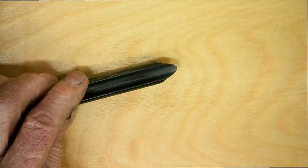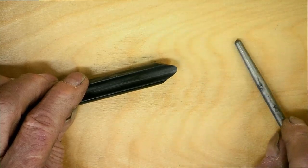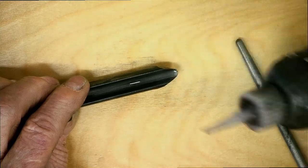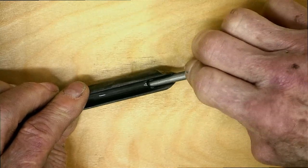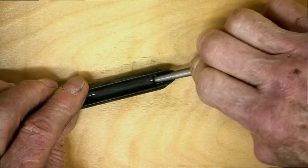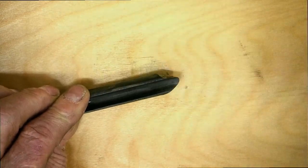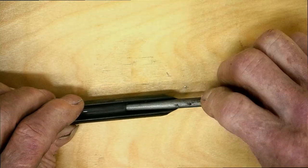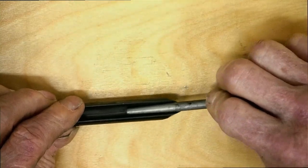For the bowl gouge, I'll use the pen file to do the tip, a little drop of lapping fluid in there for lubrication. I'll move the file back and forth inside the flute while I rotate the tool to get the whole tip done. Now I can do the whole gouge, the wing as well, with the pen file running it up the wing.